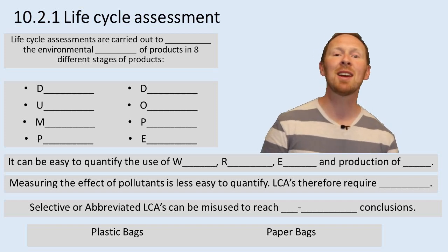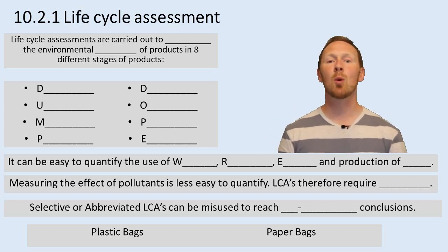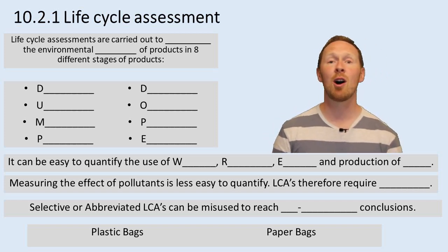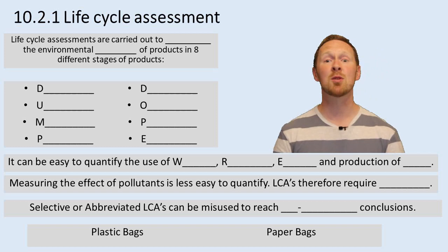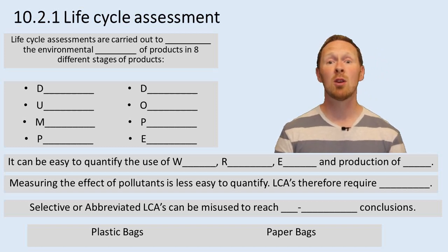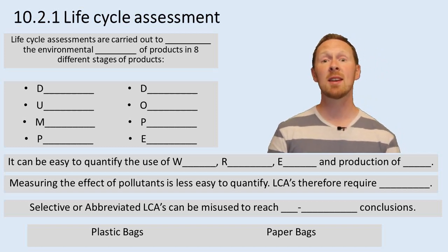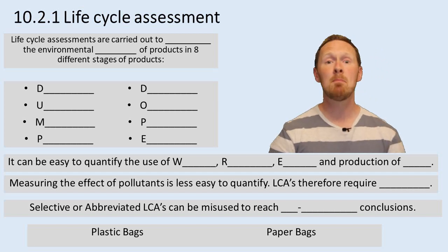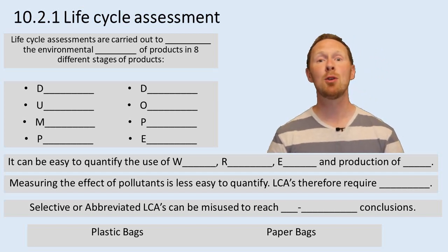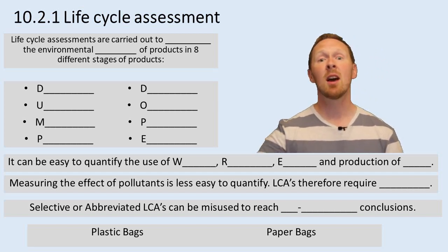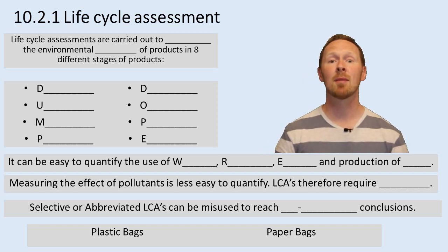Now there are some things that are really easy to quantify — for instance, the use of water, resources, or energy, and also the production of waste. We can measure that, we can put numbers on it, we can put figures to it, and we can see what sort of impact that's having.